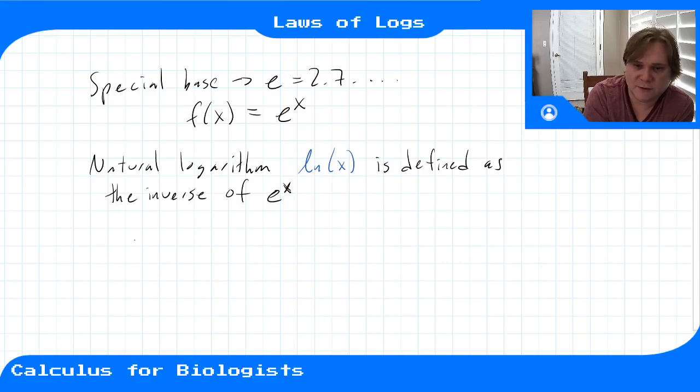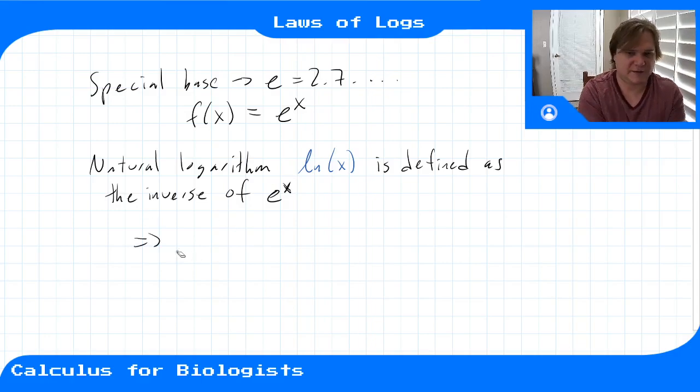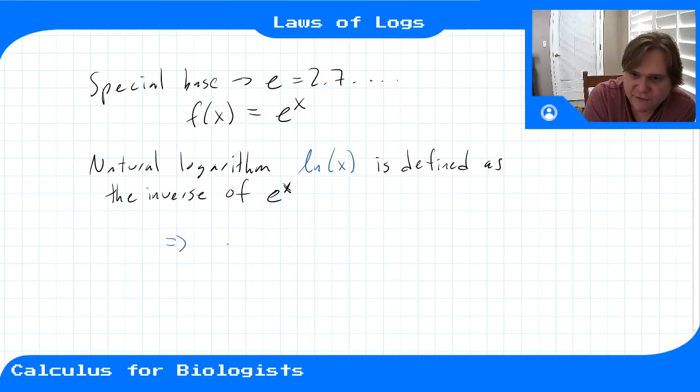Okay, so what that means is that if I have ln(e^x), then that just gives me back x. And if I have e^(ln(x)), I get x. They're inverse operations to each other.